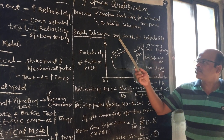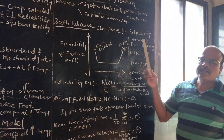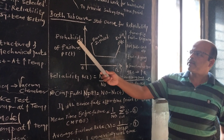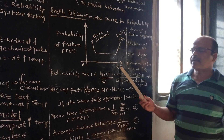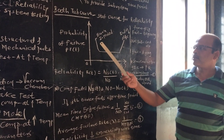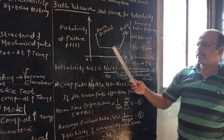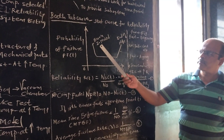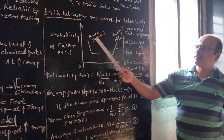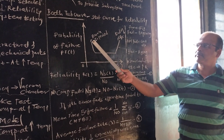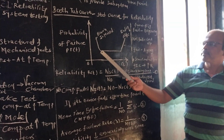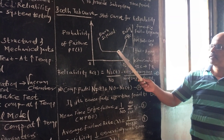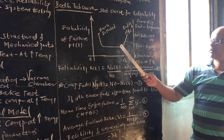The bathtub curve is a standard curve for reliability. It is a graphical representation of probability of failure P(t) versus time t. At the beginning of any electronic component's life there is a high failure rate, called the burn-in period. After this, components give constant output — they are not failing — represented by a straight line.